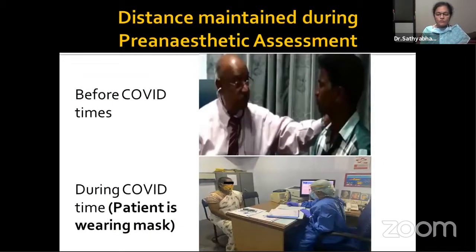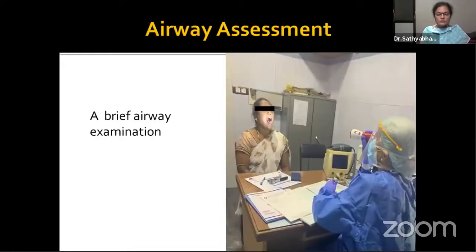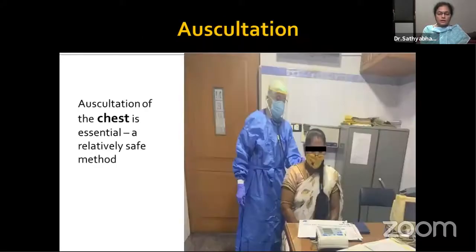Before COVID times we examined patients in the pre-anesthetic clinic without worries about distancing. Now the patient, wearing a face mask, sits across the table at a distance of about three feet from the anesthetist. No attendant is allowed inside the room unless the patient is a child. Patients with tracheostomy must wear a mask over the tracheostomy tube as well. While assessing the airway, the patient is asked to remove the mask — we assess mouth opening, dentures, Mallampati score, and stature without touching or going near the patient. Maximum exposure time to a patient without a mask should not exceed five minutes.